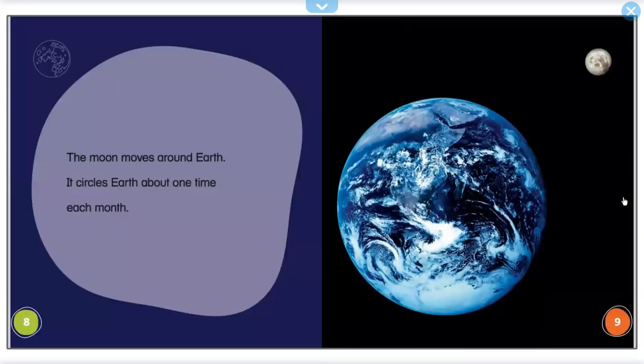The moon moves around Earth. It circles Earth about one time each month.